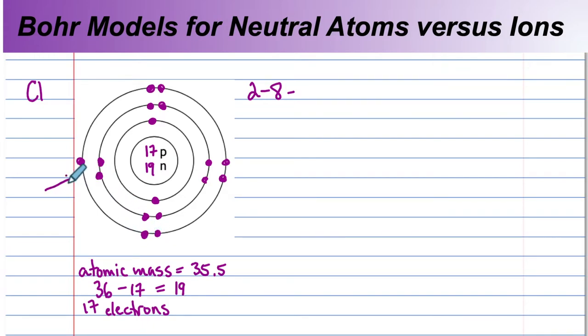So there's an empty space here. The chlorine atom has seven valence electrons. So we use two, eight, and seven. And therefore we have seven valence electrons.